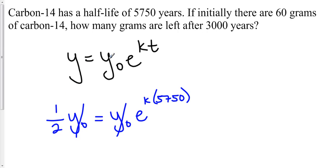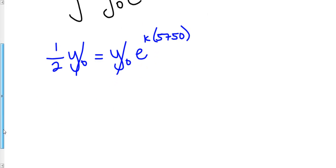Now, had we plugged in 60 for y-naught and therefore 30 for y, we would have divided both sides by 60 and 30 over 60 gives us one-half. So whether or not you want to plug in your values 60 and 30 or keep y-naught and put in half of y-naught as your function value at time 5750, it doesn't matter. You'll still get the same value.